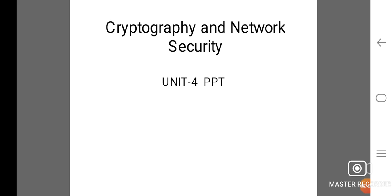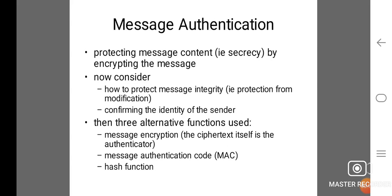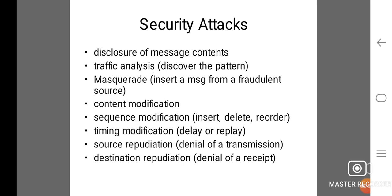Cryptography and network security unit 4: message authentication. We consider protecting message content through secrecy by encrypting the message, and how to protect message integrity from modification, confirming the identity of the sender. There are three alternative functions used: message encryption, where the ciphertext itself is the authenticator, message authentication code (MAC), and hash functions.